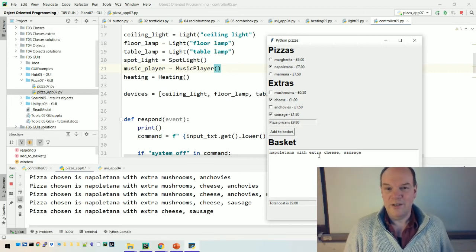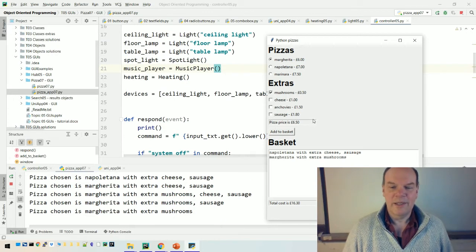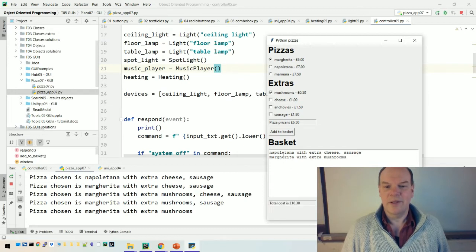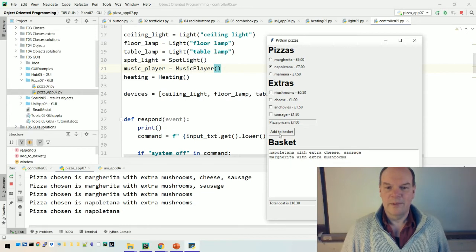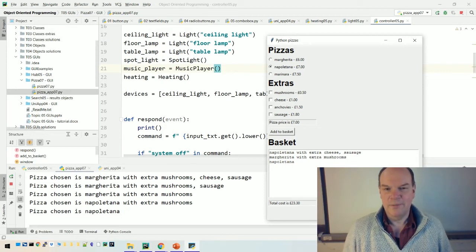The basket is just a list of the pizzas that the user's chosen. So I can choose another one, some different toppings, add that to the basket. And now the basket, we've got the total cost and the contents of the basket down here. The basket is just a list of these pizza objects and each pizza object knows about what type of pizza it is and the price and the toppings that the user selected for it.